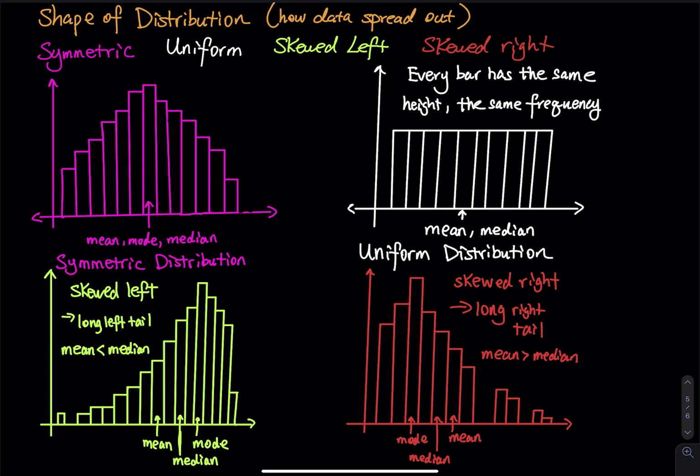In a symmetric distribution, the most important characteristic is that the mean, the median, and the mode are right in the middle. The mode is always the one with the highest frequency — it is always the tallest bar.